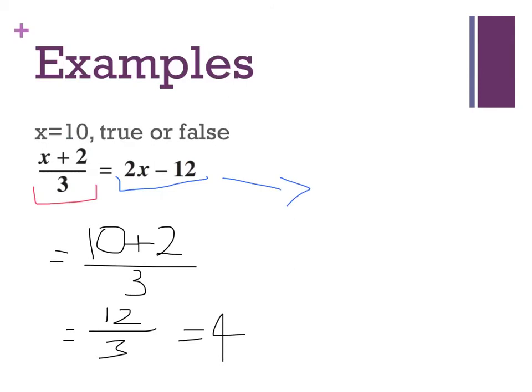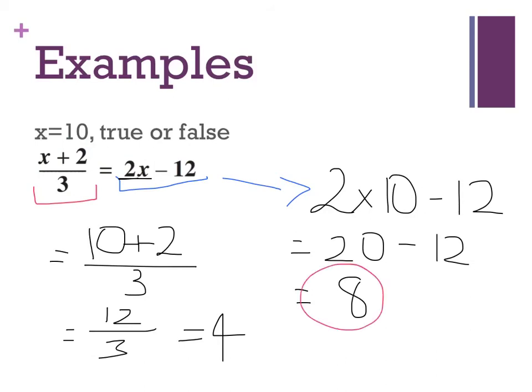Okay, 2 times—now 2x minus 12. I'm going to substitute it into the equation. I know that multiplication is going on here, so 2 times 10 subtract 12. 2 times 10 is 20 subtract 12. 20 subtract 12 is 8. So I come up with an answer of 8 for my right-hand side and 4 for my left-hand side.